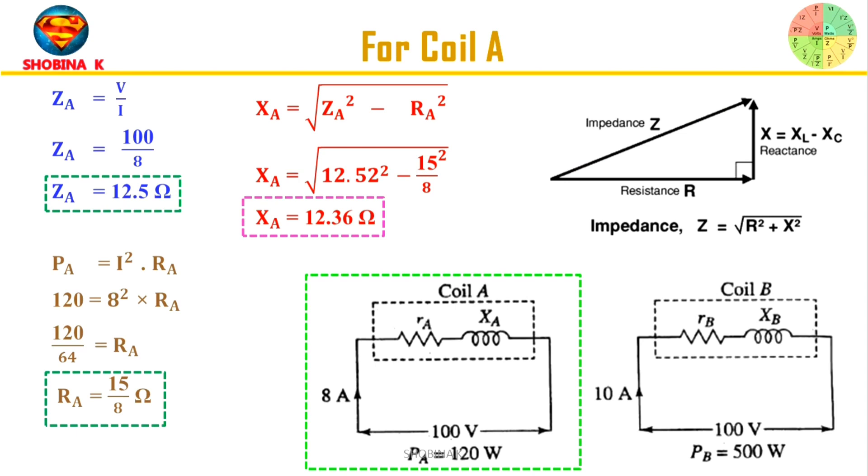Next, we need to find the resistance. The power formula can be rewritten using Ohm's law as P = I²R. The power value is given. Similarly, we know the current value. On substituting the value for power and current, we obtain the resistance of coil A.